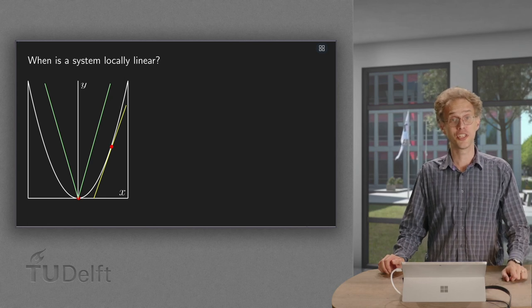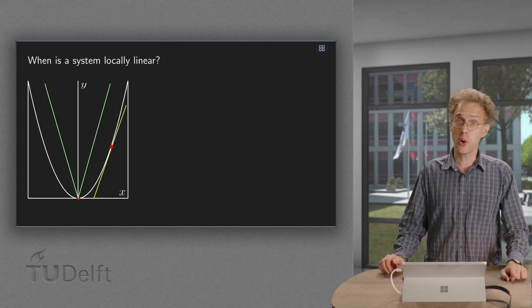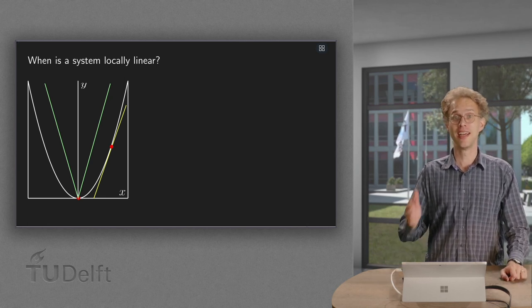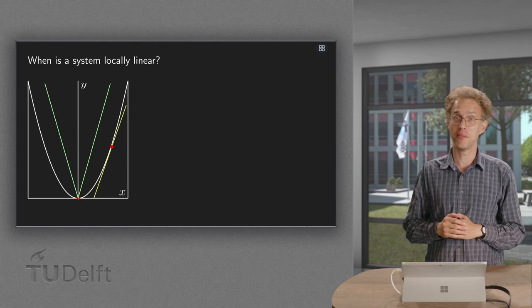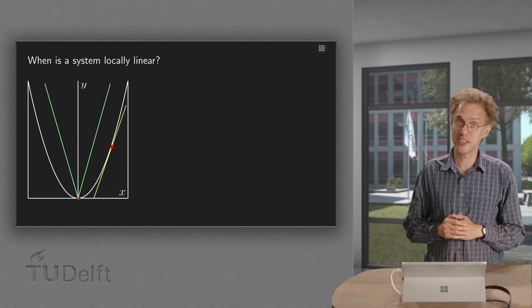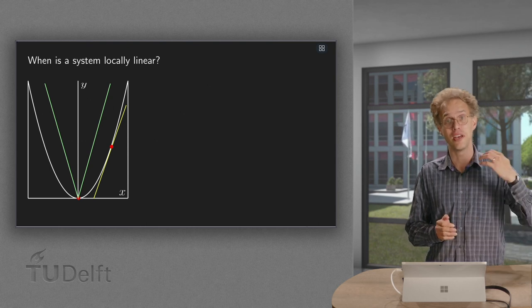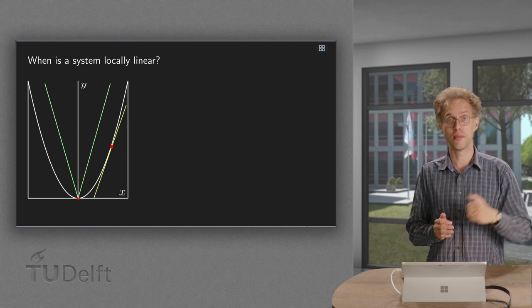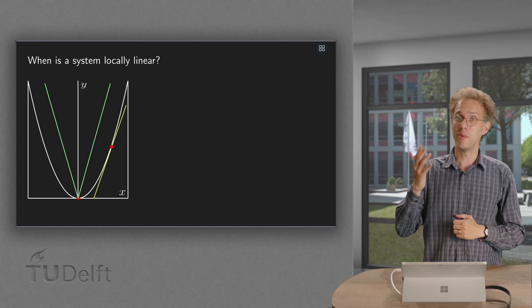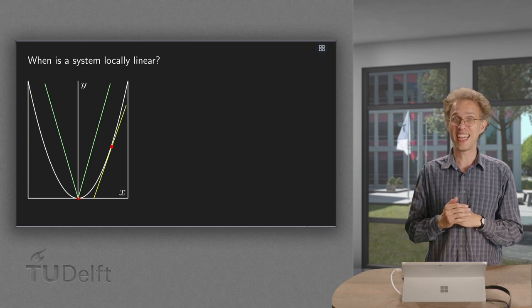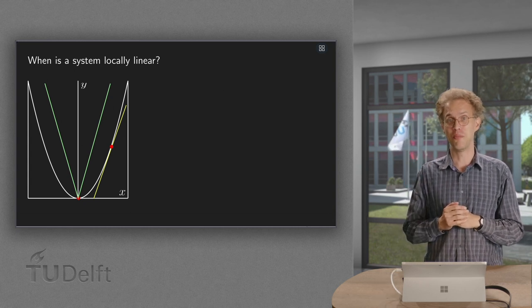If a non-linear system is locally linear, then the information about the linear system tells us a lot about the non-linear one. But when is a system locally linear?